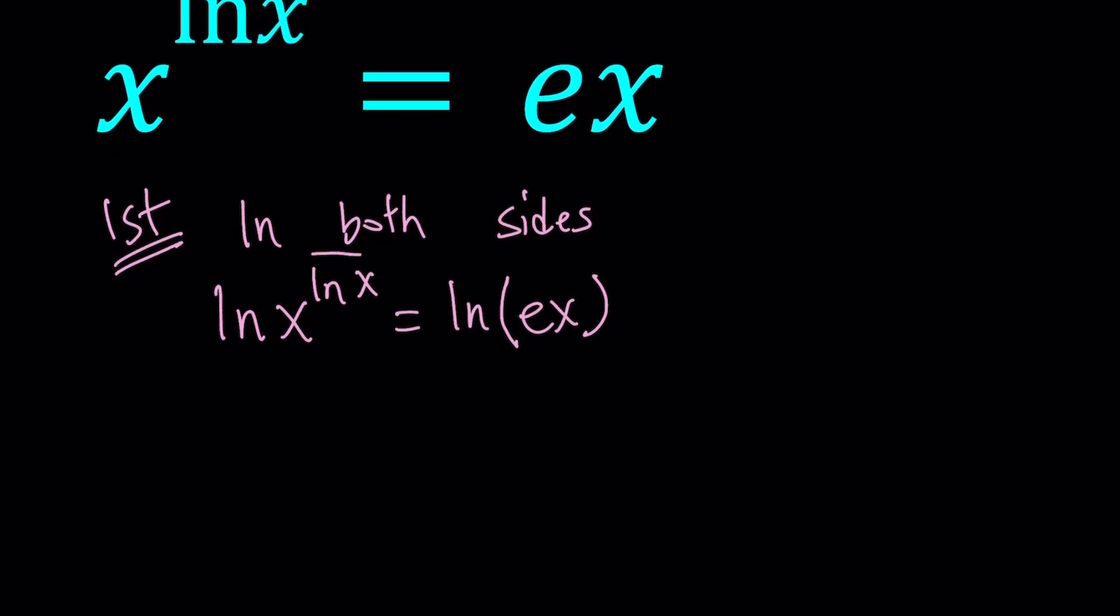So ln x is a power, so by using properties of logarithms, we can go ahead and move it to the front. This gives us ln x times ln x equals ln of e x. We know that the logarithm of a product is the sum of the two logarithms, so this can be written as ln e plus ln x.